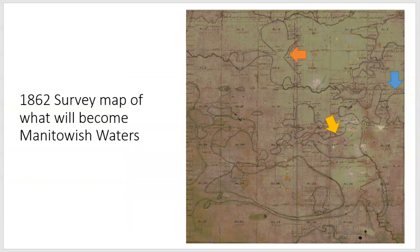The map on the right is an 1862 survey map of the township of Manitowish Waters. For some bearing, the yellow arrow is pointed at Manitowish Lake, the orange arrow at Rest Lake, and the blue arrow at the small portion of Island Lake that is within the township of Manitowish Waters.